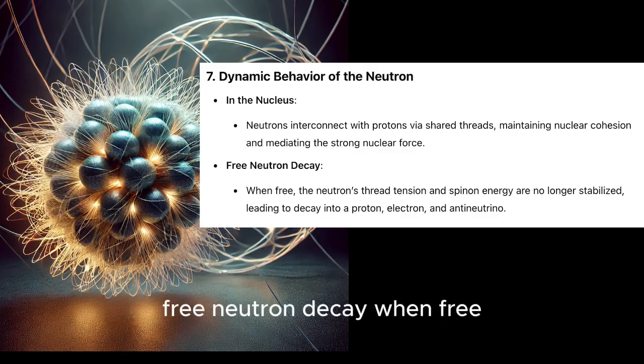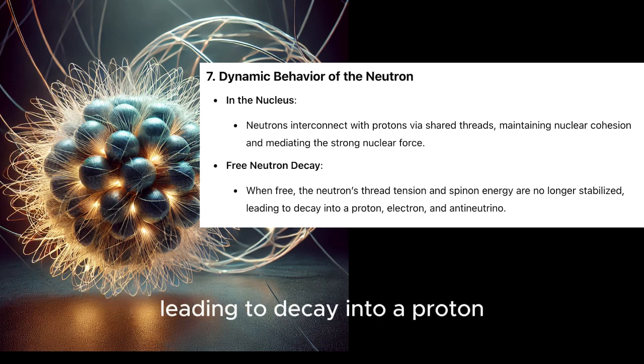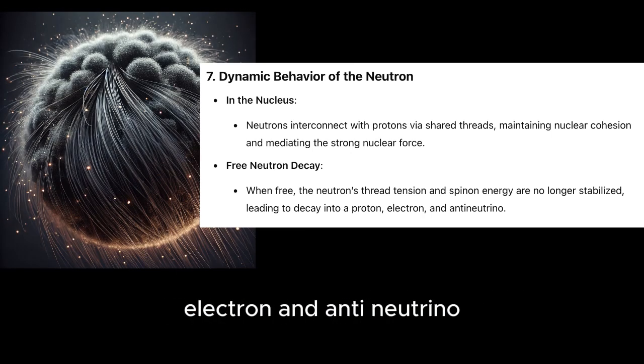Free neutron decay. When free, the neutron's thread tension and spinon energy are no longer stabilized, leading to decay into a proton, electron, and antineutrino.